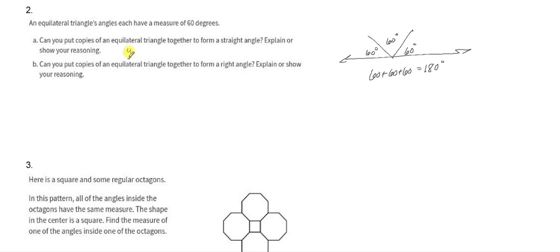So yes, three 60s make 180 degrees. There's proof of it right there.